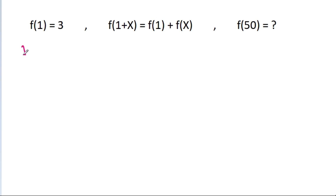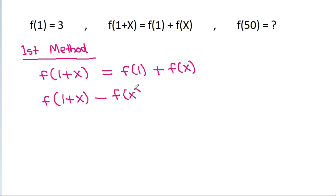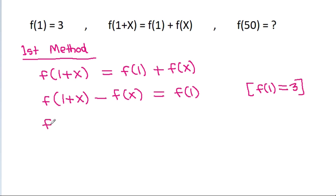So, first method. We have f(1+x) is equal to f(1) plus f(x), and f(1+x) minus f(x) will be equal to f(1), and f(1) is equal to 3. So f(1+x) minus f(x) is equal to 3.